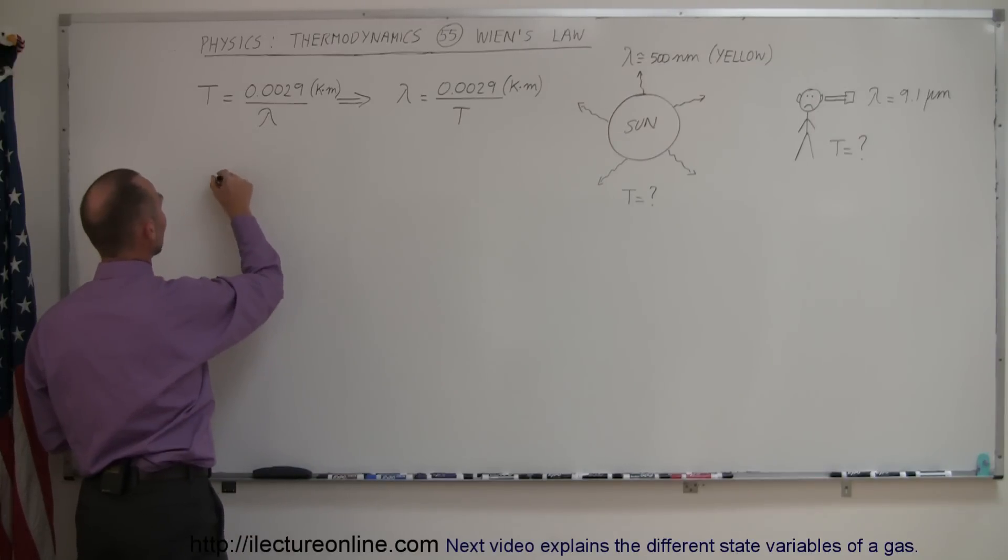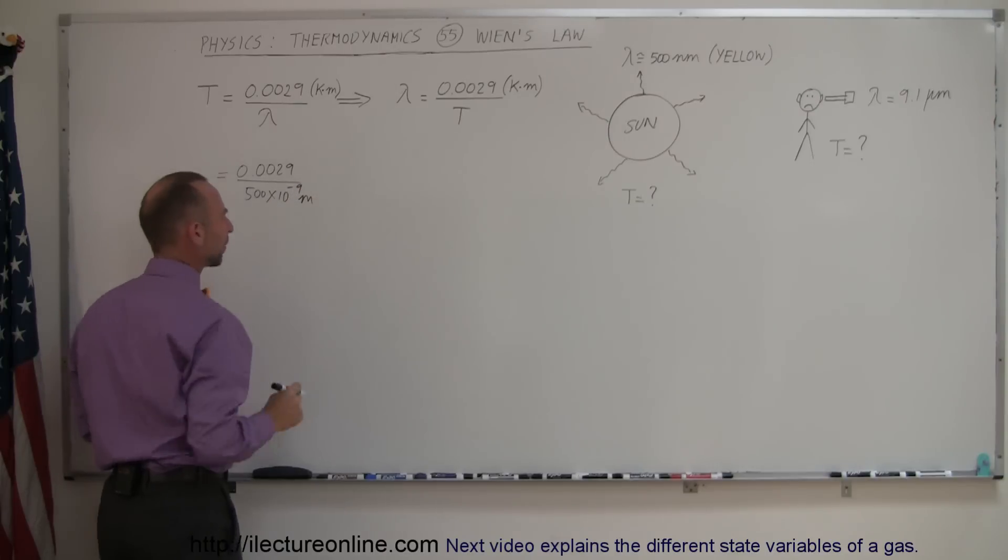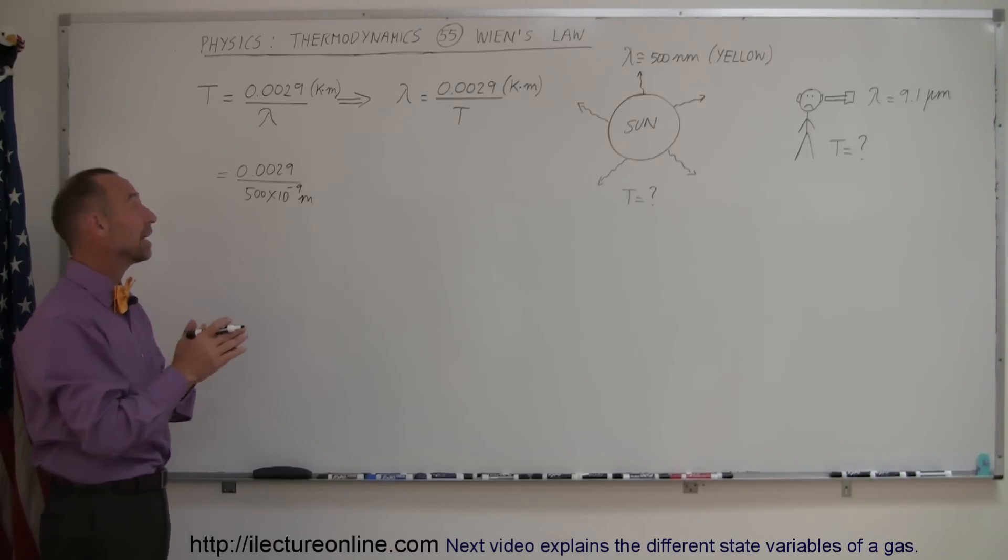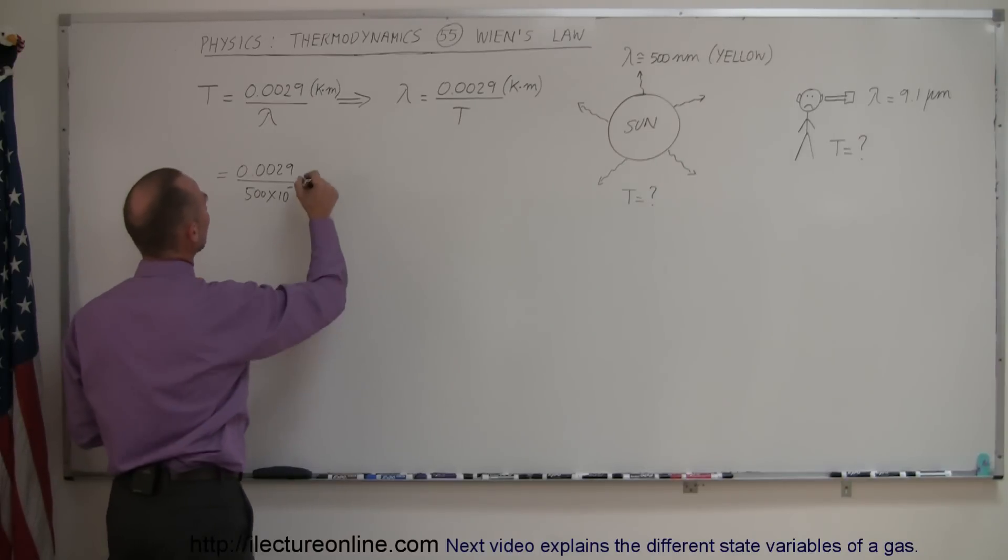So in our example of the Sun we say well it's equal to 0.0029 divided by 500 times 10 to the minus nine meters. I believe the peak radiation is closer like 492 or so nanometers but let's just round it off. And that would be Kelvin times meters. Of course meters cancel out.